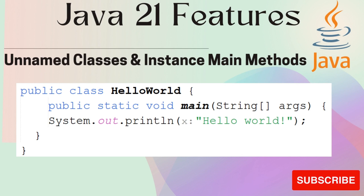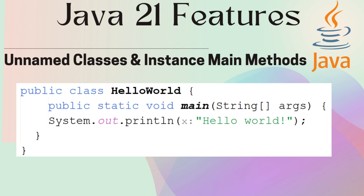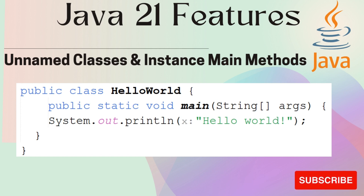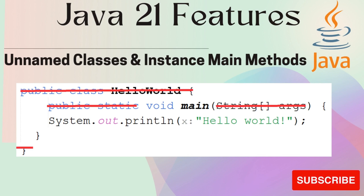Before we discuss all the features, let's start with one which is a preview feature and currently the talk of the town. The public static void main method with String array as parameters — for a new person wanting to start learning Java, this was the bare minimum they need to write even if they just want to print something. It has a class and a complex signature which is very complicated for any new learner. With Java 21, you can write your first Java program without any class or complex main method.